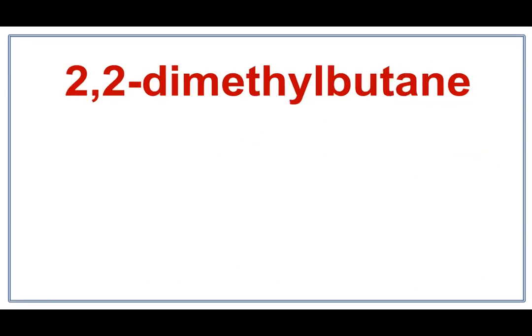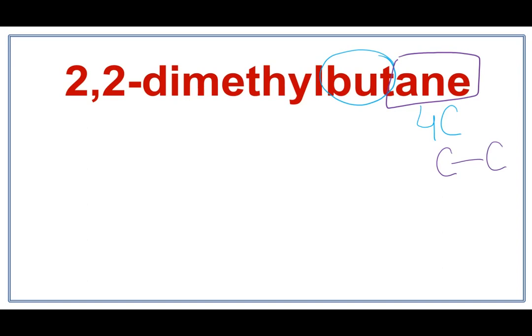Let's draw the structure for 2,2-dimethylbutane. 'But' tells us that there are four carbons in the parent chain. 'Ane' tells us that there are only single bonds between these carbons. Let's draw the parent chain with four carbons, counting 1 less: 1, 2, 3.